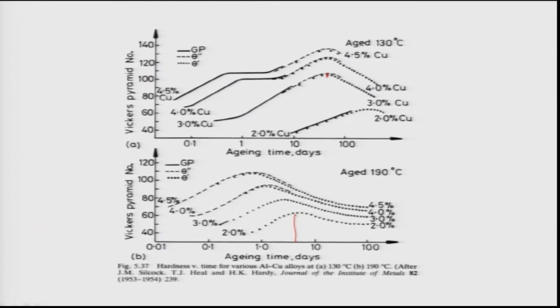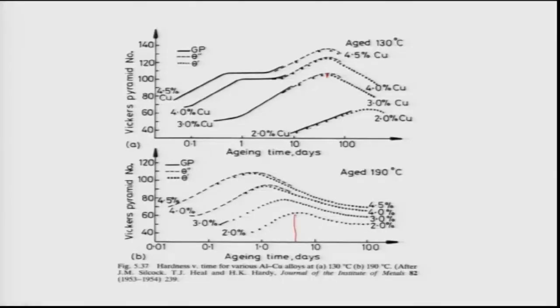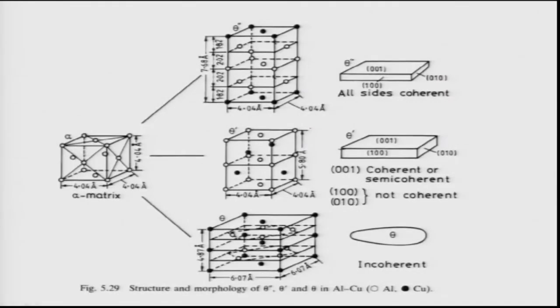GP zones — copper layers on aluminum planes — start blocking dislocation motion, but because only a few copper layers are present, hardening from GP zones is not very high; it mainly comes from coherency strain in the matrix. However, once theta prime or theta double prime begins forming, hardness increases rapidly.